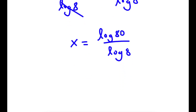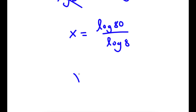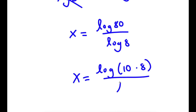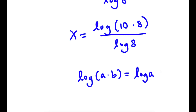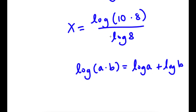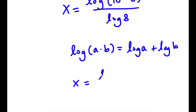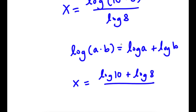So now log 80 — well, 80 is the same thing as 10 times 8, so I'm going to rewrite log of 80 as log of 10 times 8. And if I have something in the form log of a times b, this is equal to log a plus log b. So log 10 times 8 is going to equal log 10 plus log 8, and now I have this over log 8.